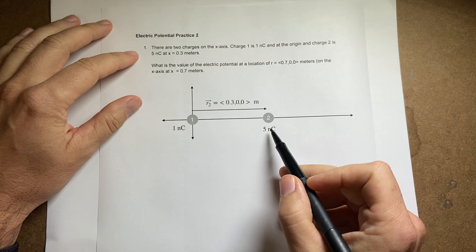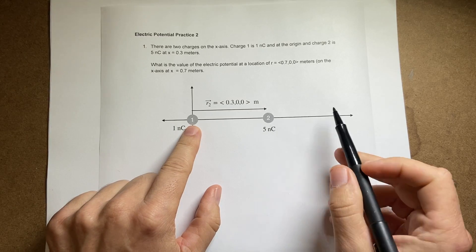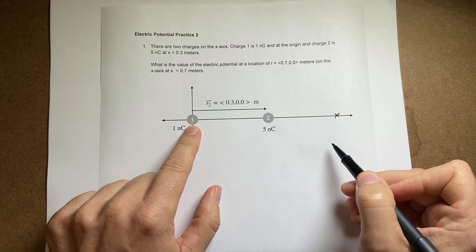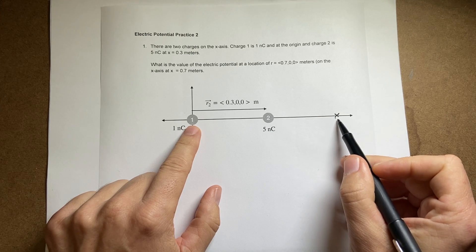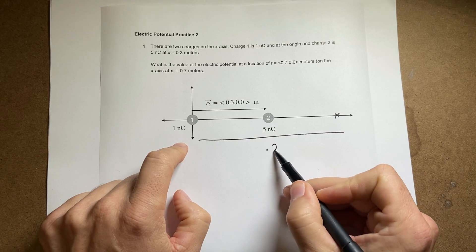So I have a one nanocoulomb charge and a five nanocoulomb charge separated by distance of 0.3 meters, and then I want to find not the electric field but the electric potential right here, and this distance is 0.7 meters.